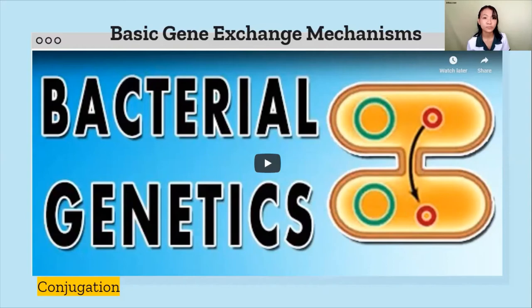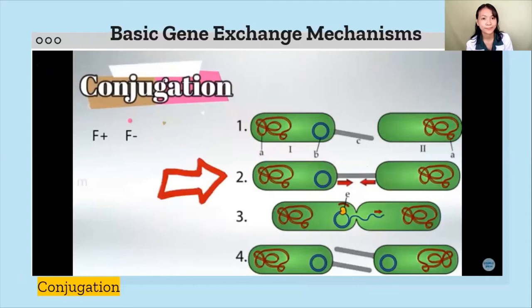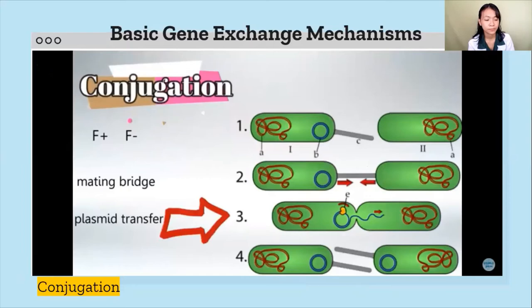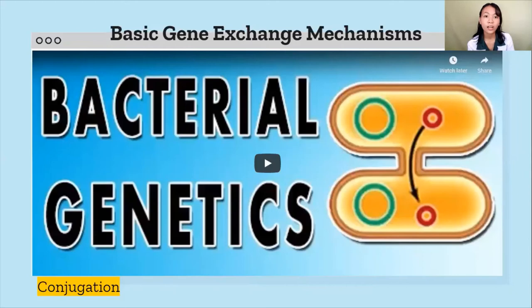Some bacteria have a sex pilus — we call these bacteria F-positive. Other bacteria don't have a sex pilus — we call these F-negative. The sex pilus is encoded by the bacterial plasmid, not the bacterial chromosome. The F-positive bacterium will link with the F-negative bacterium and form a mating bridge. The F-positive bacterium then makes a copy of its plasmid, which encodes for the sex pilus, and transfers this copy to the other bacterium. Now both bacteria have a plasmid encoding for a sex pilus, and both are called F-positive. This is the process of conjugation.